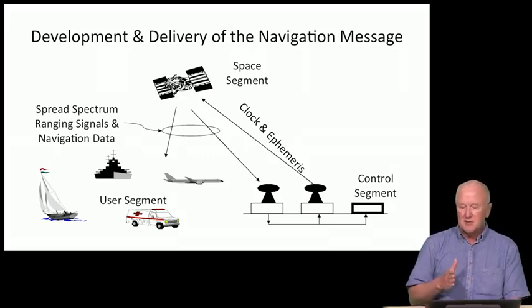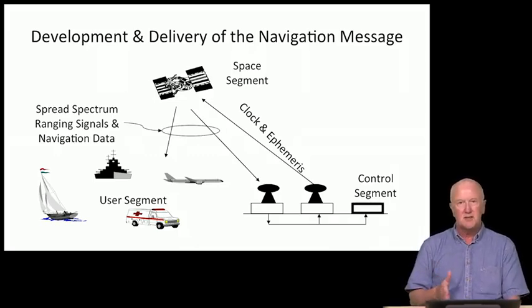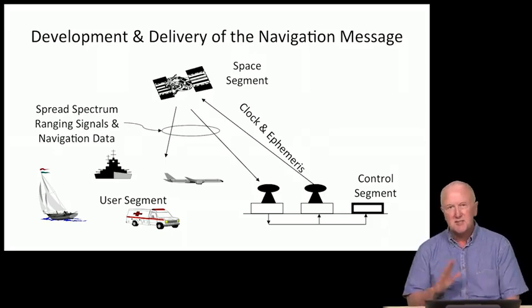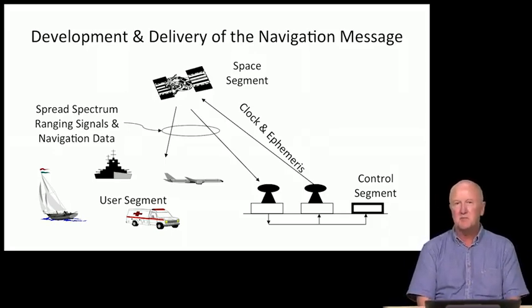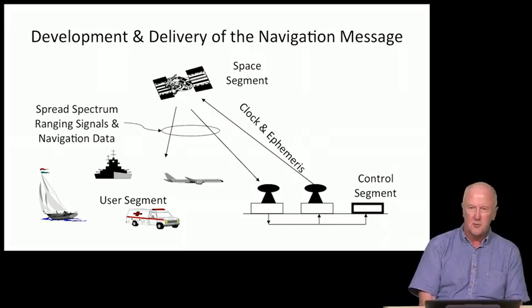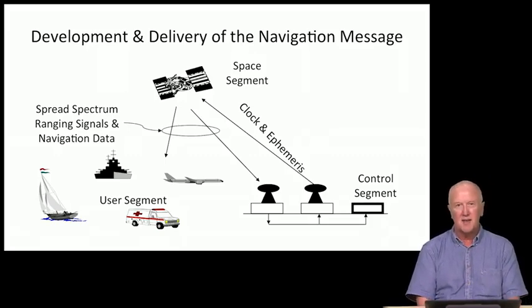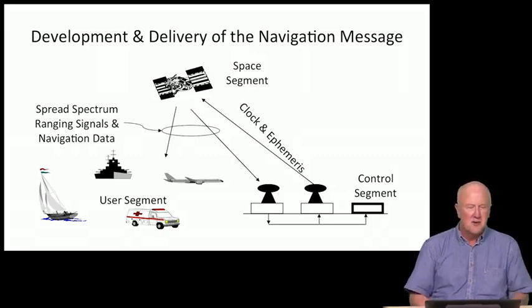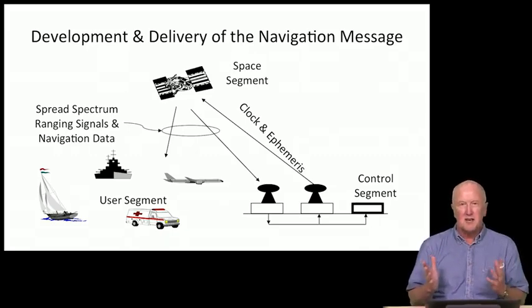This information describing location and time gets sent by each satellite at about 50 bits per second. And if you're aware of modern Wi-Fi, modern Wi-Fi works at tens or even hundreds of millions of bits per second. So why did GPS only use 50 bits per second? Why so low?